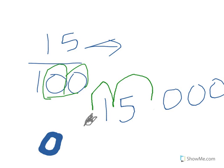So the answer will be 0.15. Okay, so let's try once more. We have, for example, 67 over a thousand.